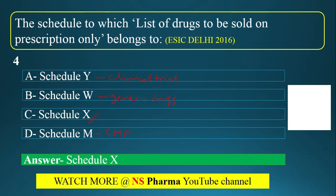One important point: Schedule H drugs are also sold on the basis of prescription only. So both Schedule H and Schedule X should be sold on prescription only. Since Schedule H was not among the options here, the answer is Schedule X.